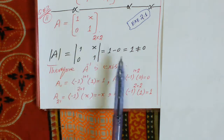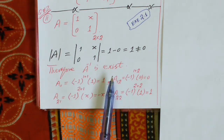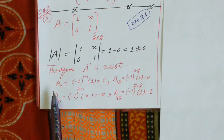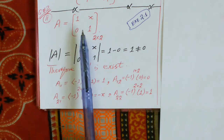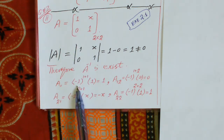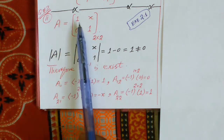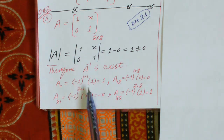Therefore, A inverse exists. The working rule for calculating the inverse of a matrix: first, we calculate the cofactor of each element of matrix A. The cofactor of the element in the first row and first column equals (-1) raised to the power 1+1, multiplied by the minor obtained by deleting the first row and first column. We get 1, and multiplying by 1 we get 1.